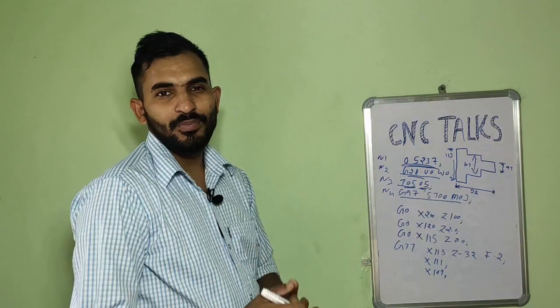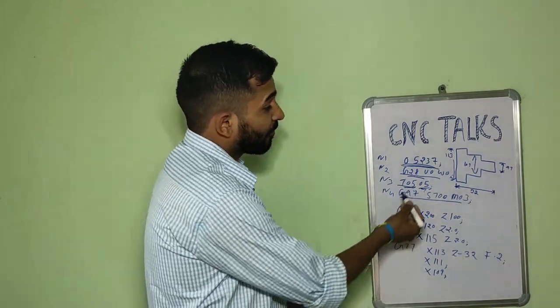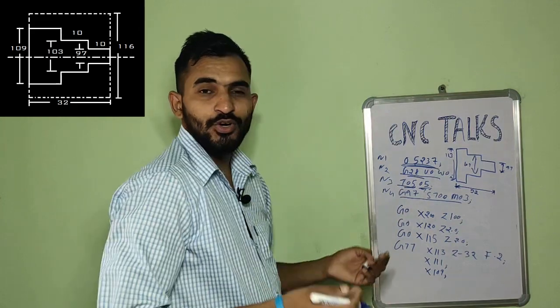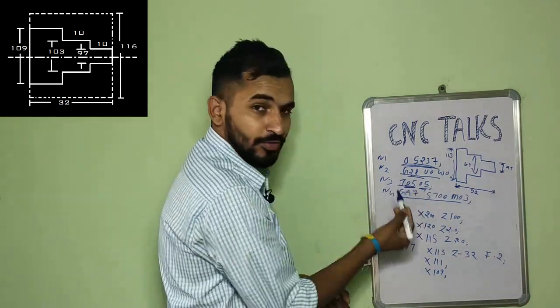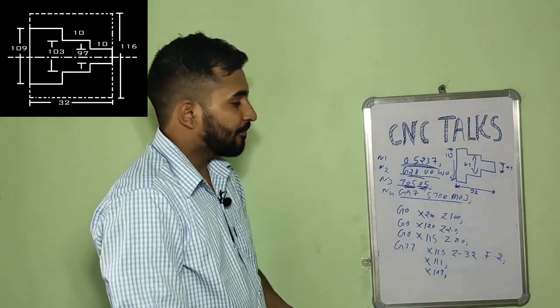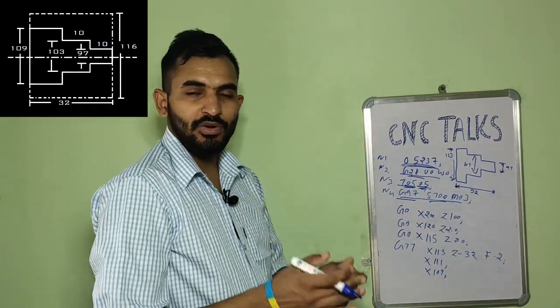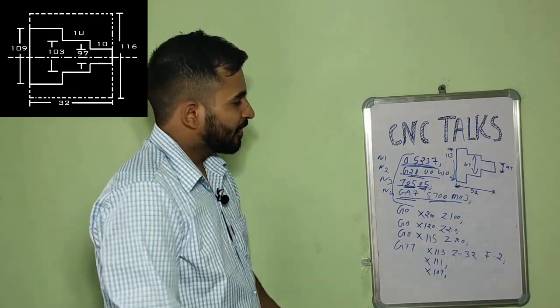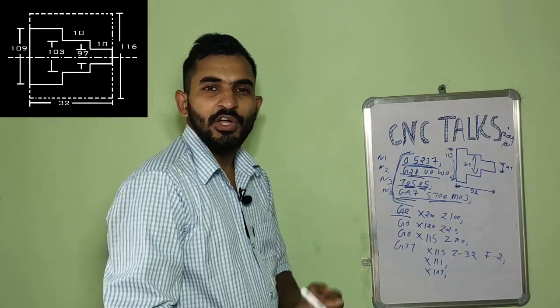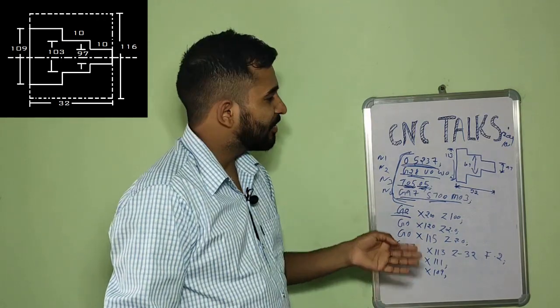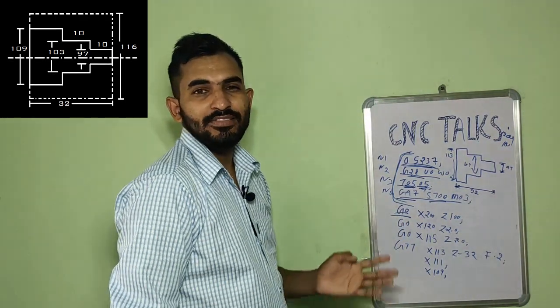As you can see, I have created a program using G77 for the first portion of this component. The program starts with program number 5237. The second line is the home position code which is G28. In the third line, we call the tool which is tool number 5 with an offset number of 05. In the fourth line, G97 is used for constant RPM which is 700 and M03 to start the spindle in clockwise direction. If you're having any problem with this portion, you can watch my previous videos for detailing of these codes. Now, the first thing we need to do is to call our tool from tool turret to anywhere near our component.